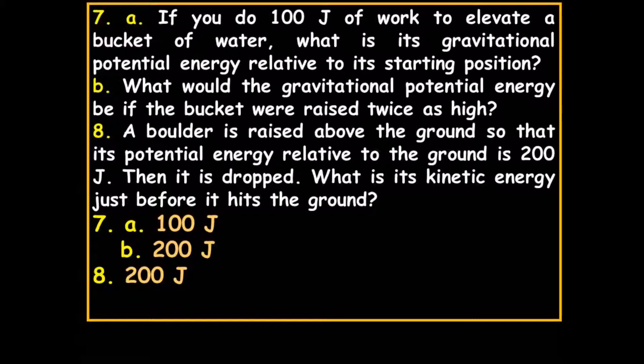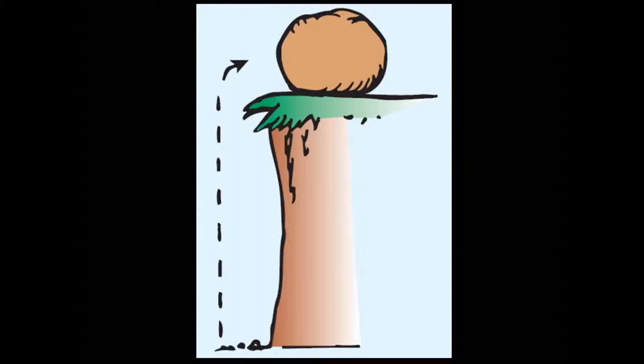A boulder is raised above the ground so that its potential energy relative to the ground is 200 joules, then it's dropped. What is the kinetic energy just before it hits the ground? It's going to give up the 200 joules, so it'll be 200 joules. You put 200 joules in, and you release 200 joules.